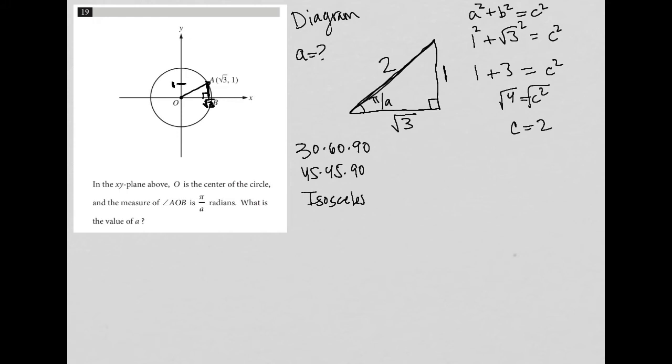And then you may have things that are not any of those, but you just need to know how to use A squared plus B squared equals C squared. Or you may need to use SOHCAHTOA. So this is really it.